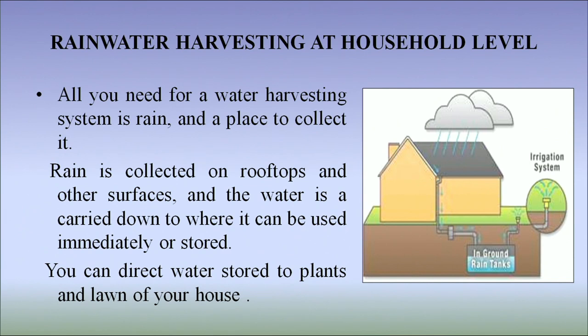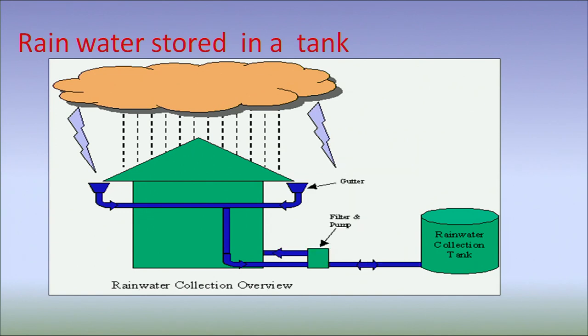Now, we would like to discuss about rainwater harvesting at the household level. All you need for a water harvesting system is rain and a place to collect it. Rain is collected on rooftops and other surfaces and the water is carried down to where it can be used immediately or stored. You can direct water to plants and lawns for your use. The water is taken down through pipes into a tank and from the tank it can be used for irrigation. In the next slide, rain falling on the rooftop is collected by gutters on either side and from pipes it goes down.